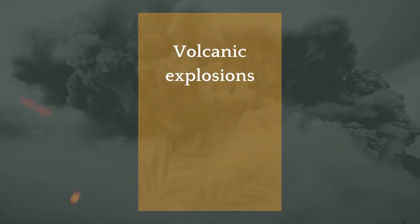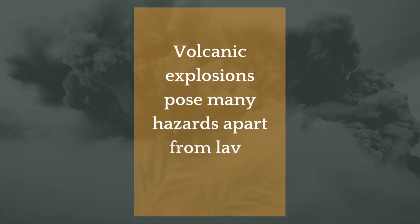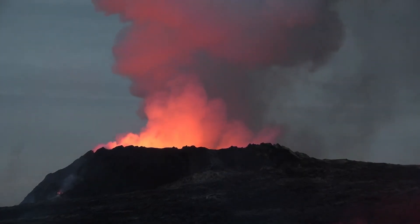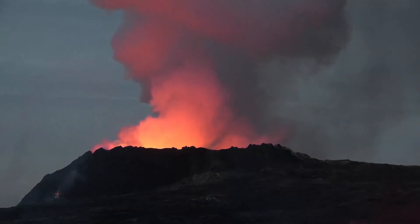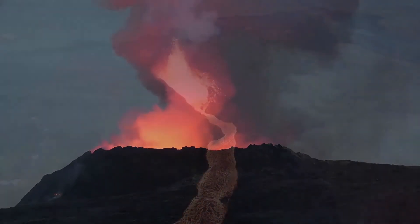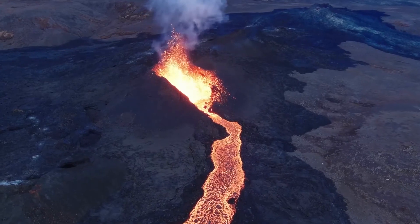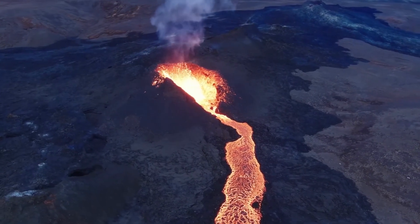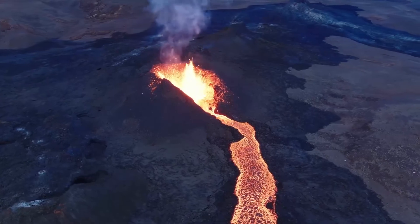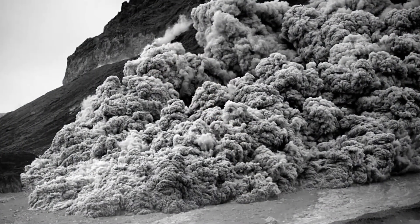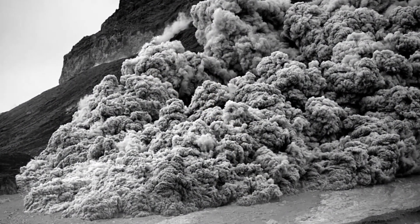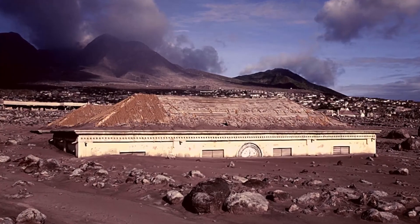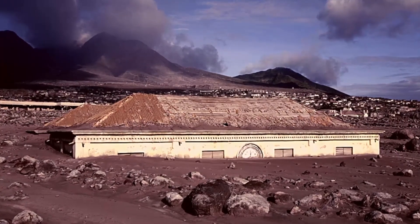Question number nine: what are the dangerous consequences of volcanic eruptions? Volcanic explosions pose many hazards. Apart from lava flows, massive eruptions can alter atmospheric temperature as sulfuric acid droplets and ash block the sun, cooling the troposphere. Throughout history, huge volcanic explosions have been accompanied by volcanic winters, which have paved the way for catastrophic famines. Volcanic eruptions are followed by pyroclastic flows — a mix of ash, high-speed toxic gases, and avalanches of hot rocks.